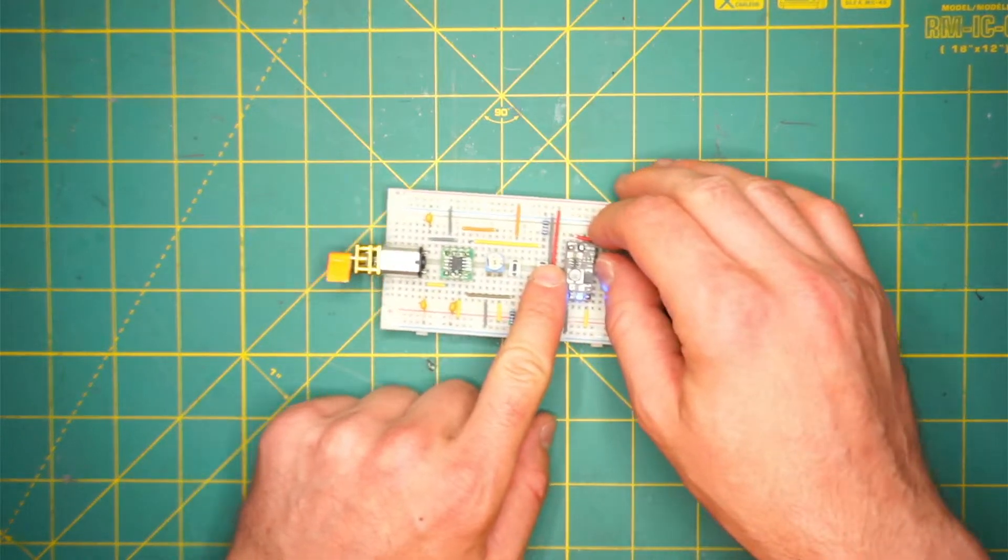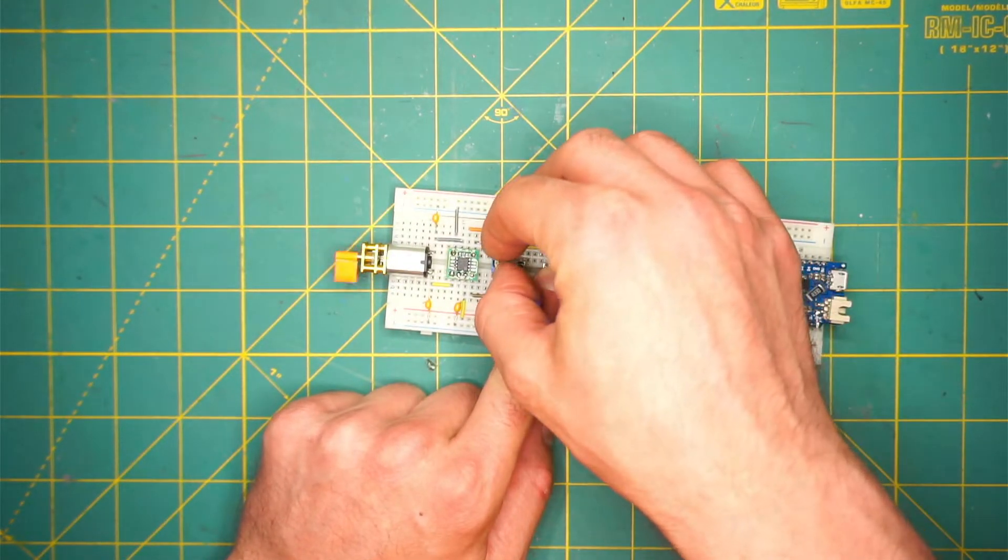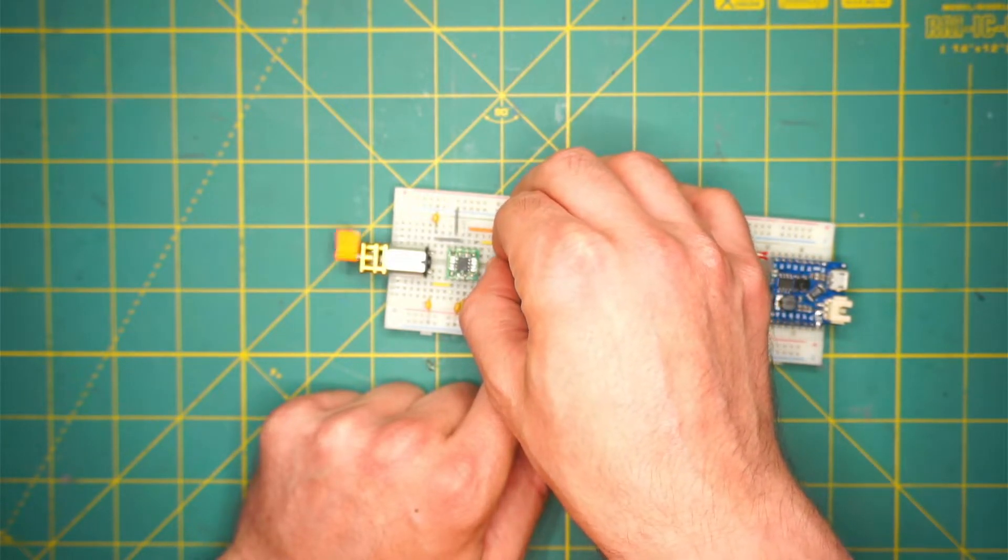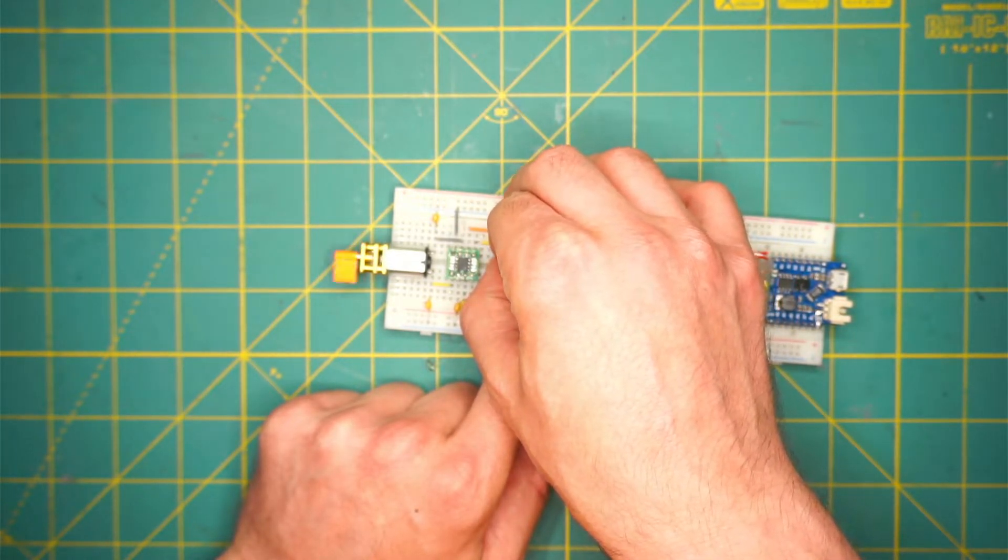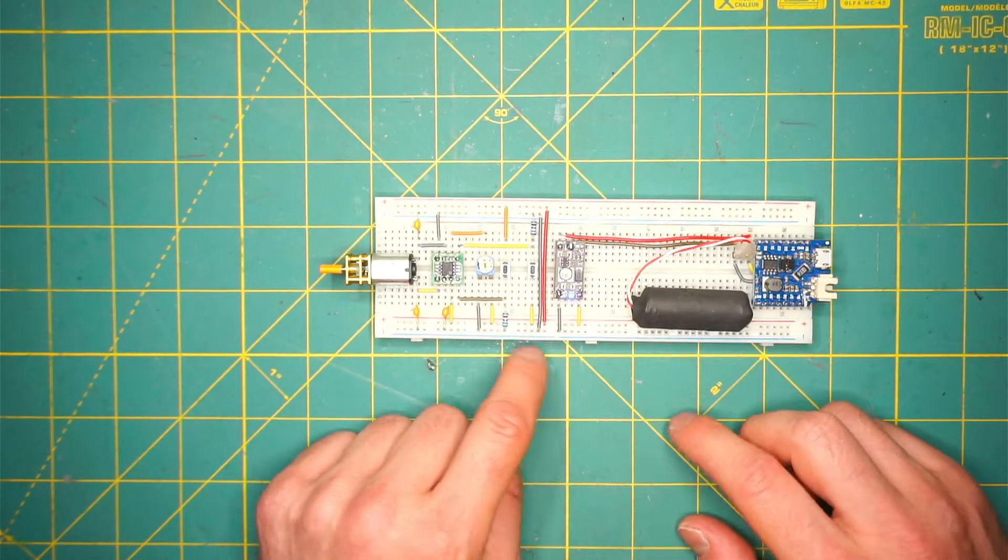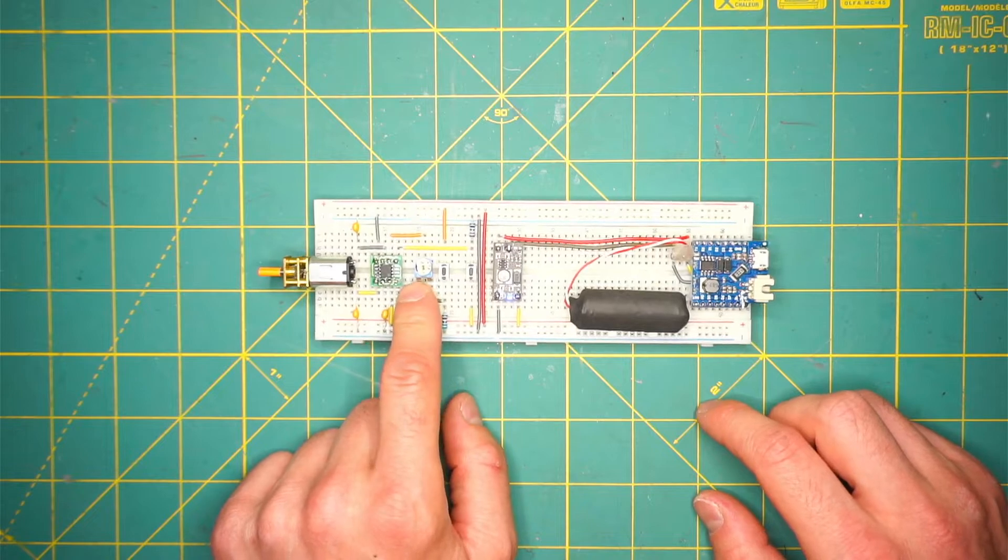Here I'll demonstrate how this trim pot works. If I spin it one direction the motor goes fast, and if I turn it the other way it goes slower. So we have speed control of our screwdriver.